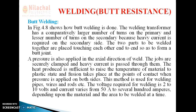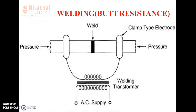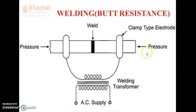During the total heating period we are applying the pressure throughout. Here is the line diagram of the butt welding process. In butt welding, as in all types of resistance welding, we are using a transformer. Both ends of the output of the transformer are connected to both jaws. One jaw is a fixed jaw and another is a movable jaw, though in this diagram both jaws are shown as movable so that the pressure can be applied.